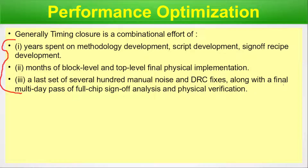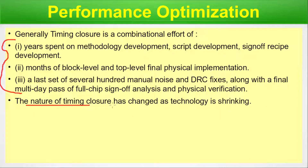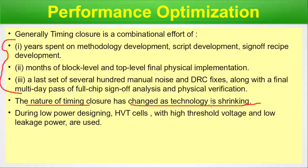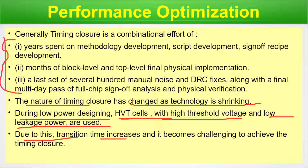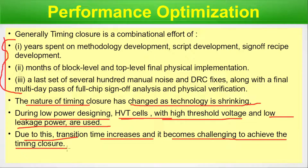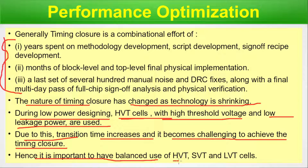The nature of timing closure has changed with technology shrinking. Timing closure before 65nm was different, after 65nm it is different, and below 10nm it is different again. During low power design, HVT cells (high threshold voltage, low leakage power) are used. However, this increases transition time and makes timing closure more challenging. Hence it is important to keep a balanced use of HVT, SVT, and LVT cells.